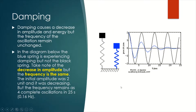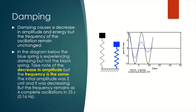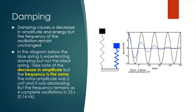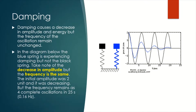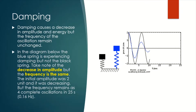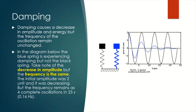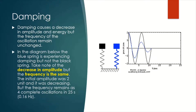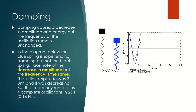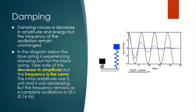What about the frequency? Look at their frequency. Does frequency change in damping? We know that the black spring does not undergo damping, but the blue spring does. Both of them made four complete oscillations in 25 seconds — that is, their frequency is 0.16 hertz.